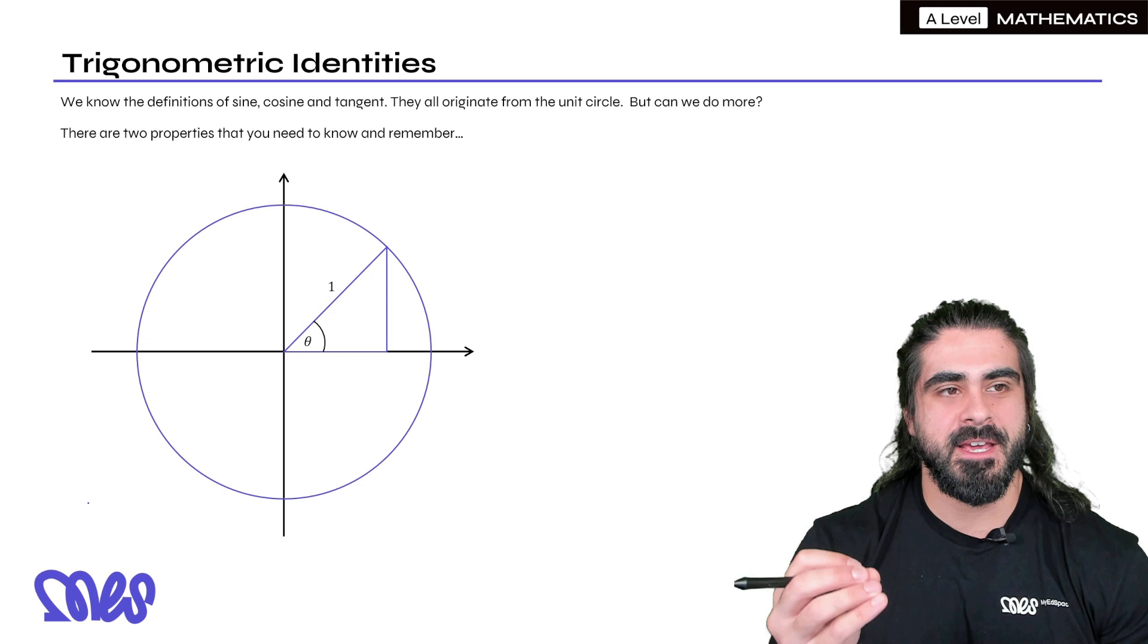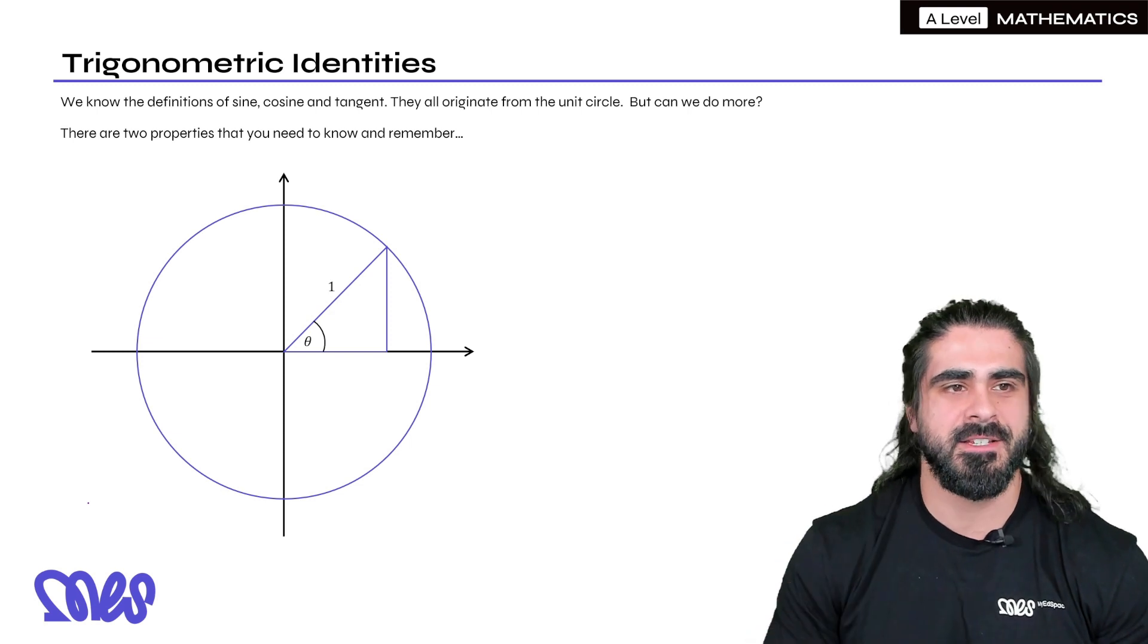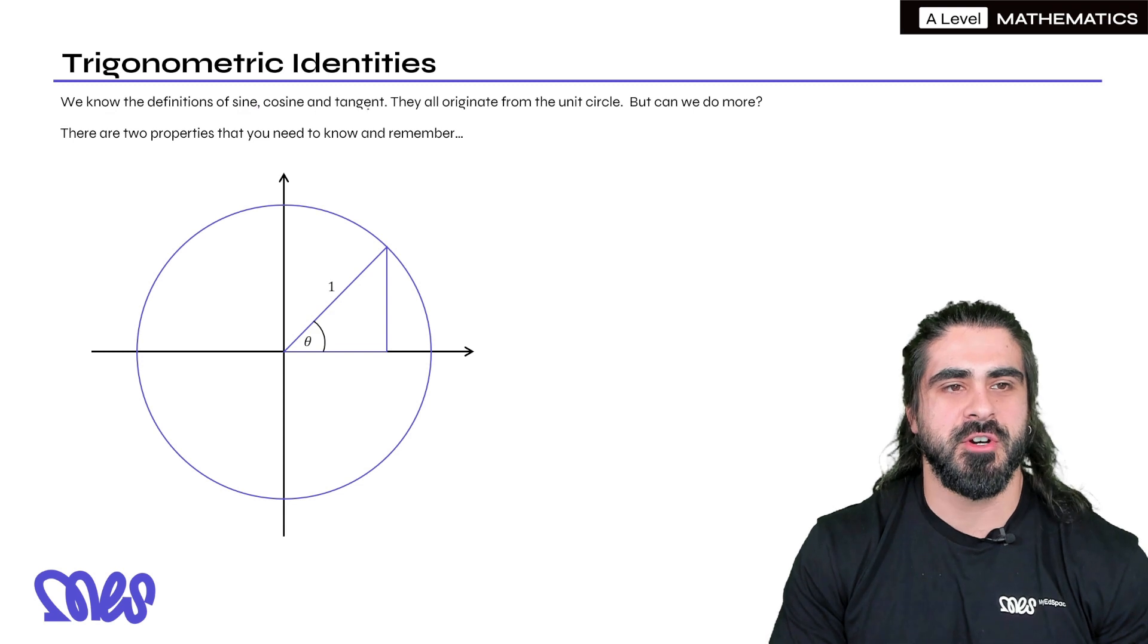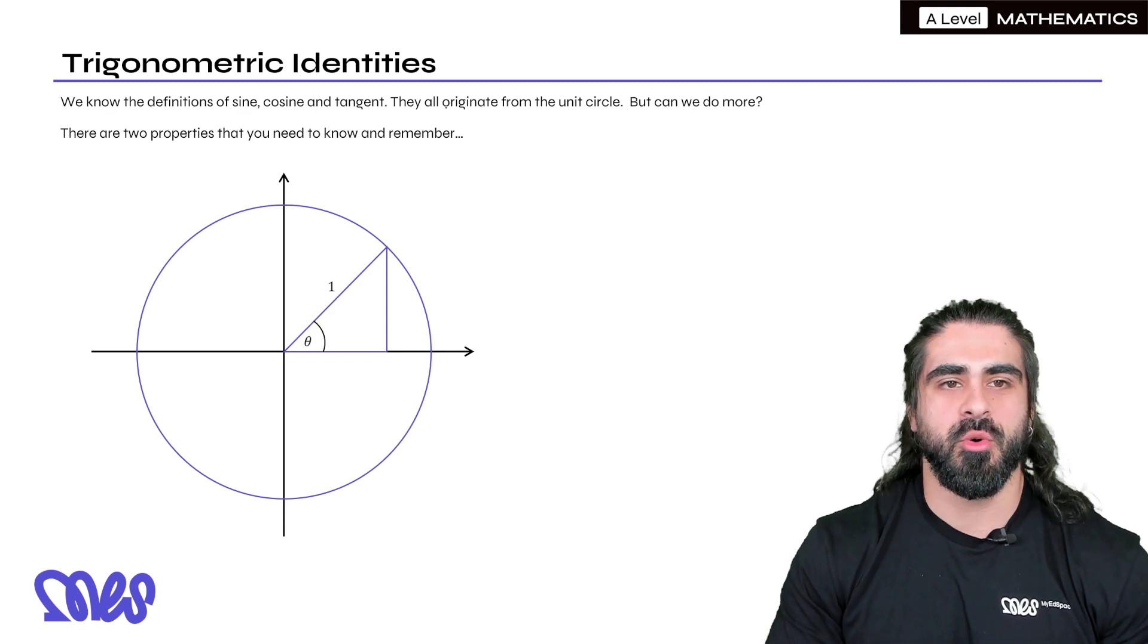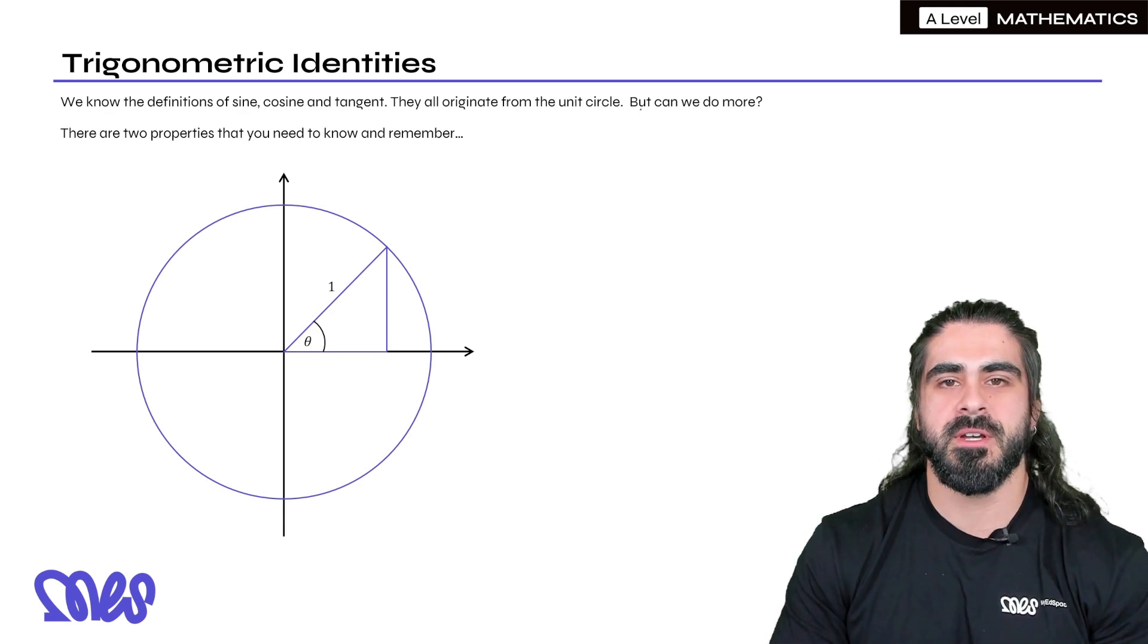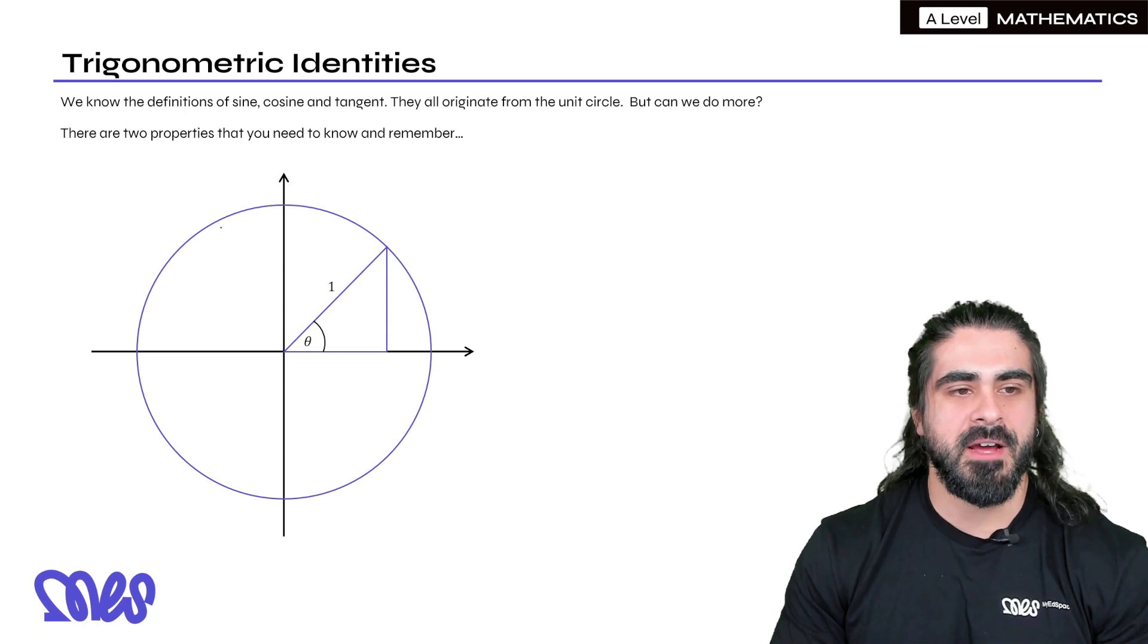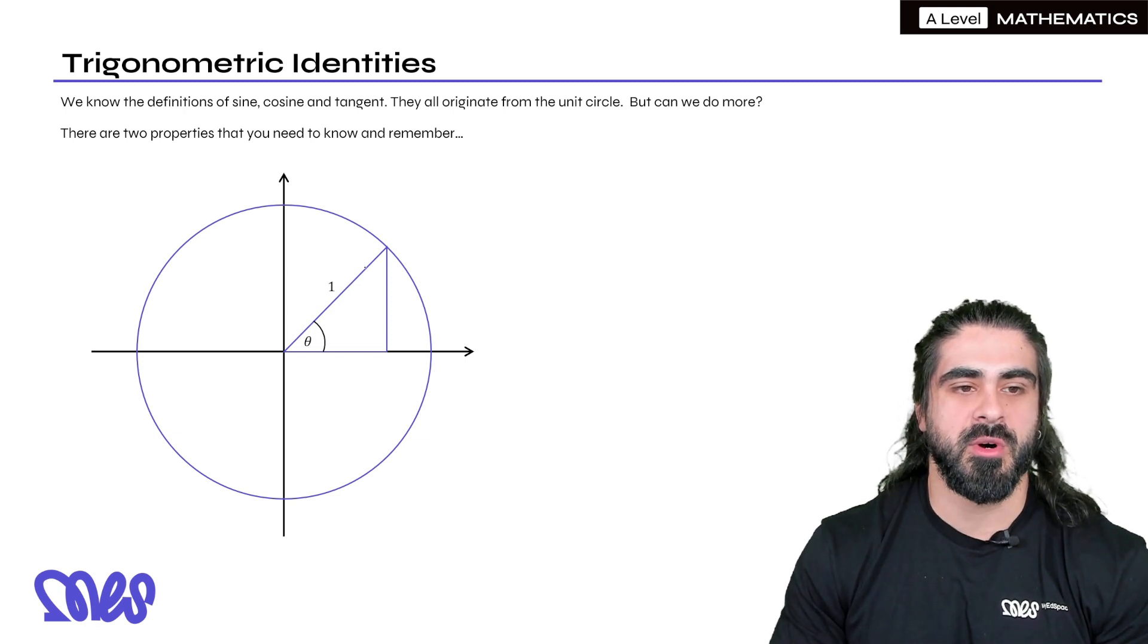Now in year 12 in AS Maths, we need to know some trig identities that are very important for solving. We know what the definitions of sine, cosine and tangent are. They all originate from the unit circle. But can we do more with this? There are two properties that we need to know and remember, in year 13 there are more. But we have this unit circle, meaning the radius is 1 and I formed a triangle out of that.